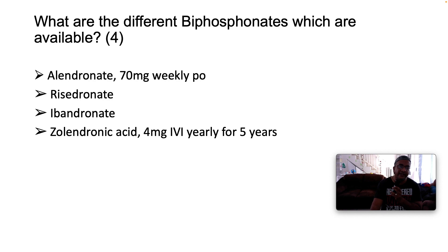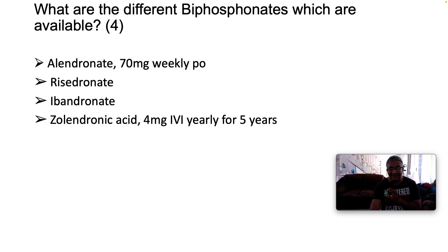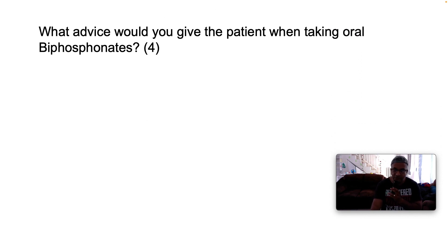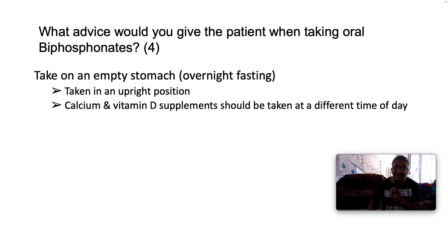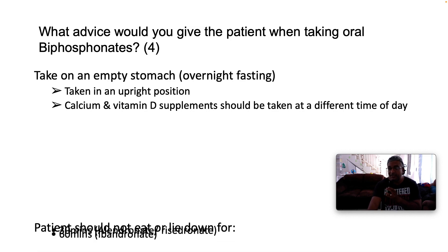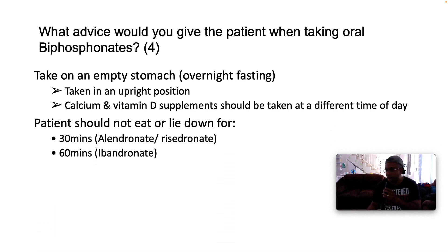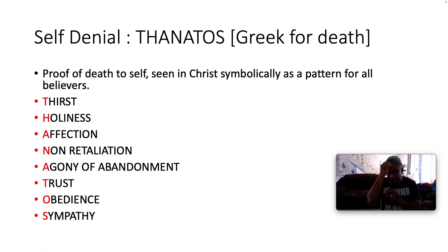The different bisphosphonates available include alendronate at 70mg weekly, risedronate (risedronic acid), ibandronate, and zoledronic acid at 4mg IV yearly for five years. Advice for patients taking bisphosphonates: take on an empty stomach after an overnight fast, take in an upright position, take calcium and vitamin D supplementation at a different time of day as they interfere with absorption. Patients should not eat or lie down for 30 minutes after taking alendronate or risedronate, and 60 minutes after taking ibandronate.